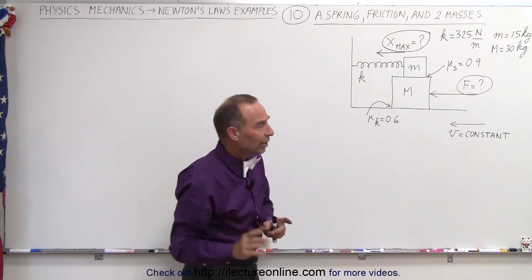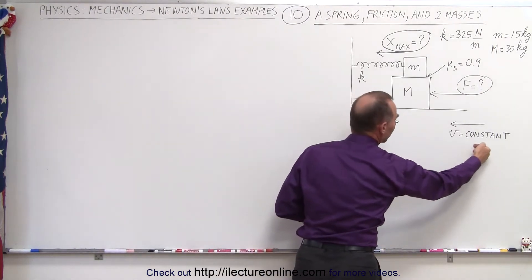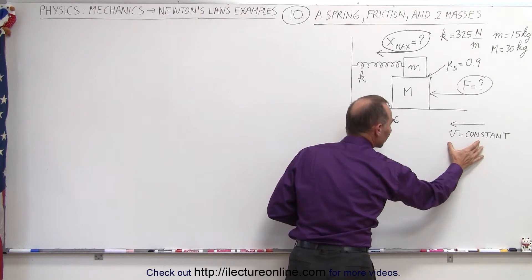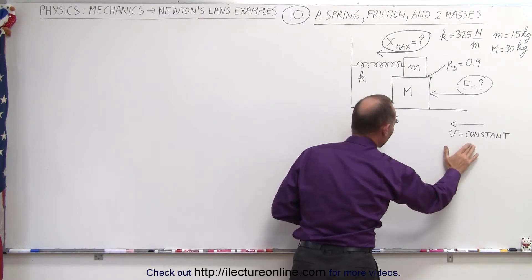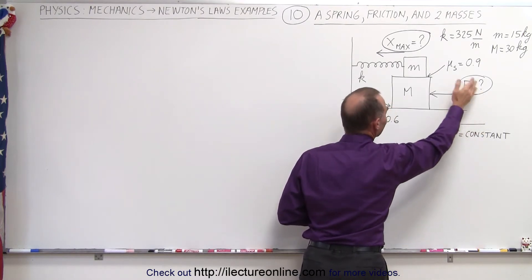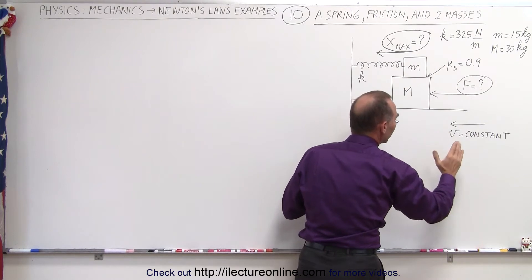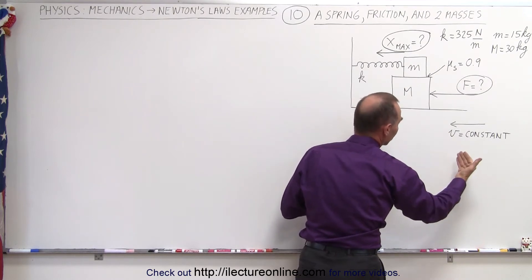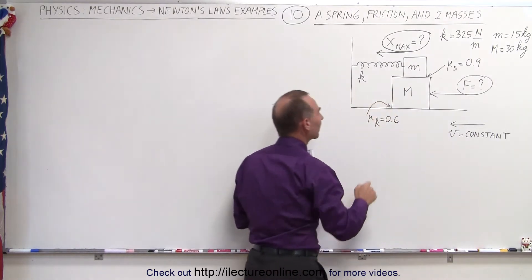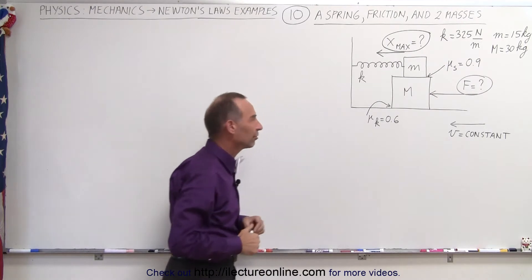We understand that the velocity by which the block is moved to the left is a constant velocity — no acceleration — so we can say that the net force acting on the system should equal zero, because there's no acceleration. And keep in mind that this involves the kinetic coefficient of friction.